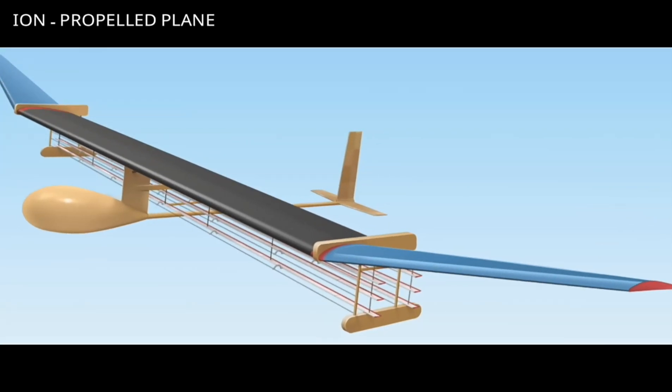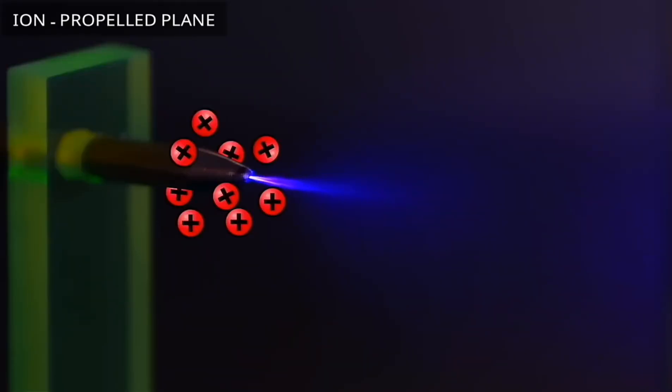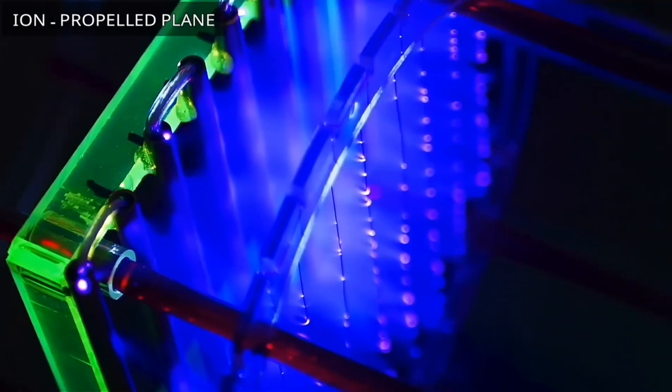The unique battery system supplies 40,000 volts of electricity to the positive wires. The positive charge strips electrons away from the air molecules, ionizing them.